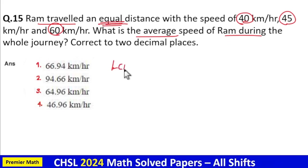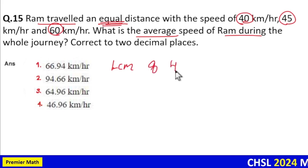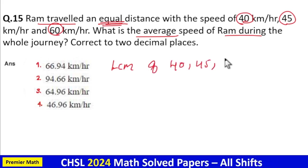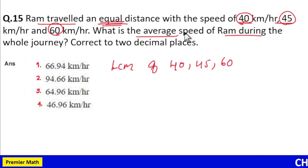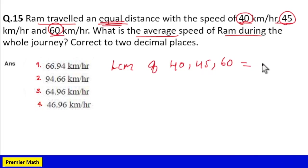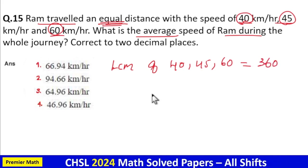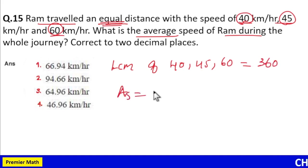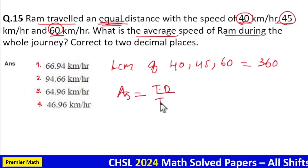Take the LCM of 40, 45, and 60. We have three speeds, so if I take LCM of these, LCM of these three is equal to 360. Now average speed is equal to total distance divided by total time.